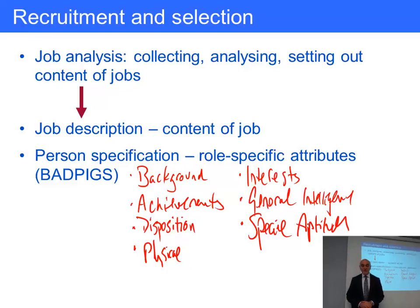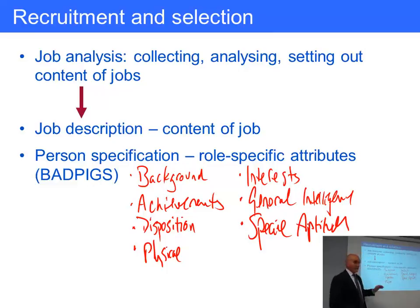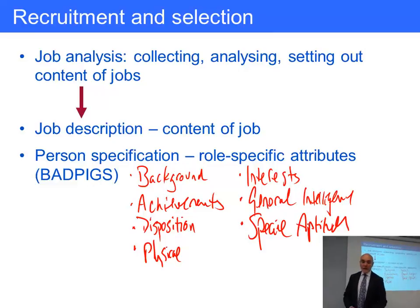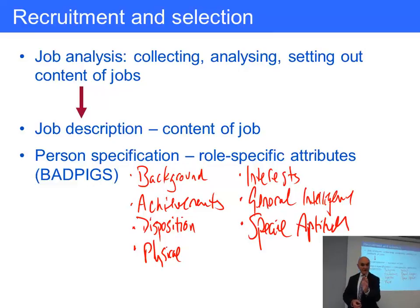What you would do is draw up a person specification. Some attributes might be must-haves — they must have a degree, three years' experience, a driving licence. Others might be nice-to-haves — it would be nice if they could speak German. When candidates apply and are then interviewed, the idea is to compare them objectively to this person specification — your best picture of what you need.